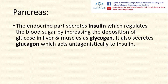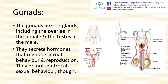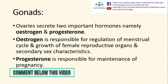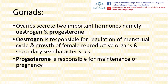Insulin is secreted by the beta cells of the islets of Langerhans in the pancreas, and glucagon is secreted from the alpha cells of the islets of Langerhans. The next glands are the gonads or reproductive organs — including the ovaries in females and the testes in males. They secrete hormones that regulate sexual behaviour and reproduction, though they do not control all sexual behaviour. The important male hormone is testosterone, concerned with promotion of male sex characteristics, bone growth, and sex drive. The ovaries secrete estrogen, responsible for regulation of the menstrual cycle and growth of female reproductive organs and secondary sex characteristics, and progesterone, responsible for maintenance of pregnancy.